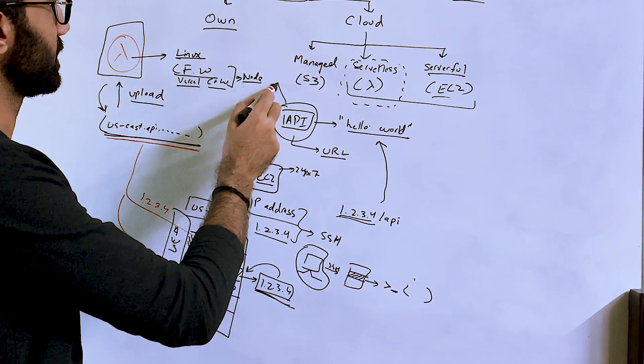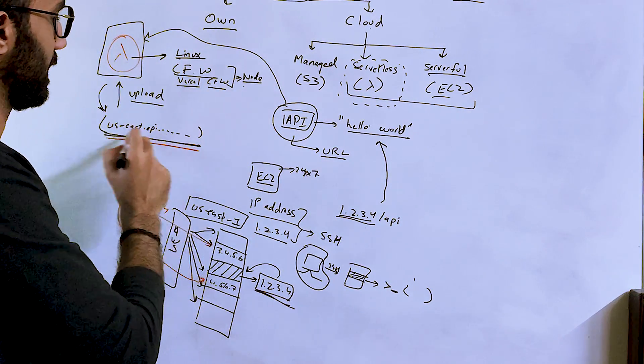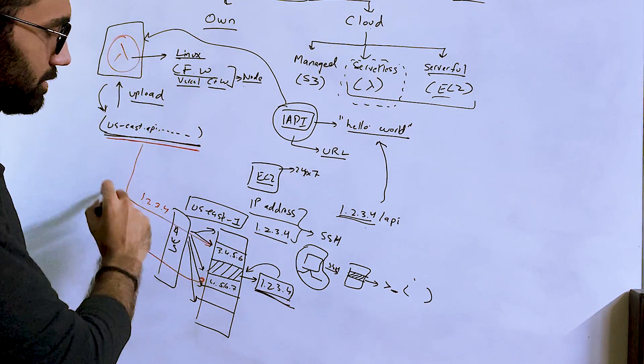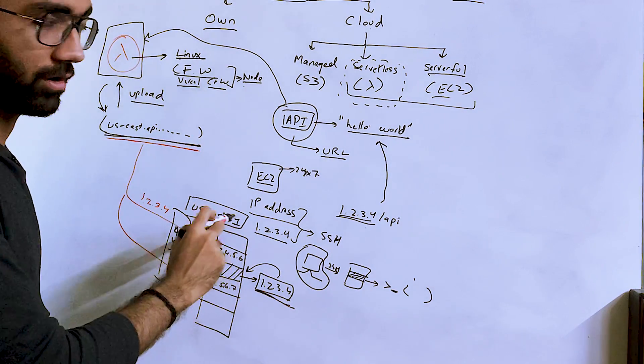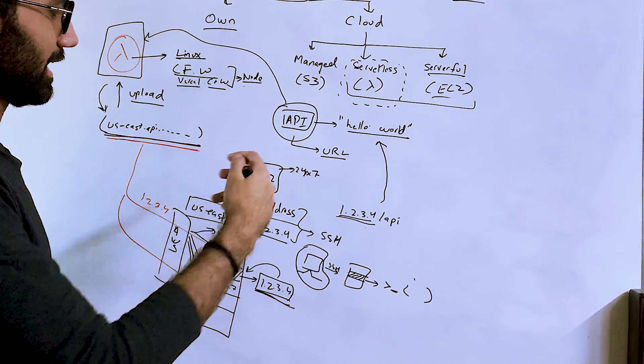In this case, you would have your API, which is executed the moment you hit this Lambda functions URL. This Lambda function provisions certain hardware on the AWS stack, executes it and returns it.